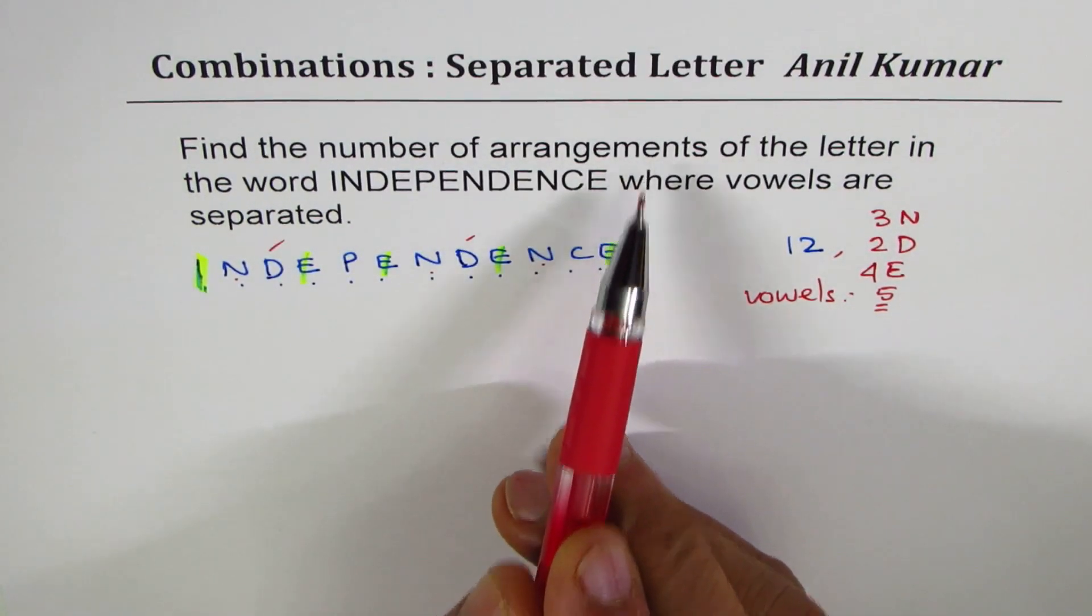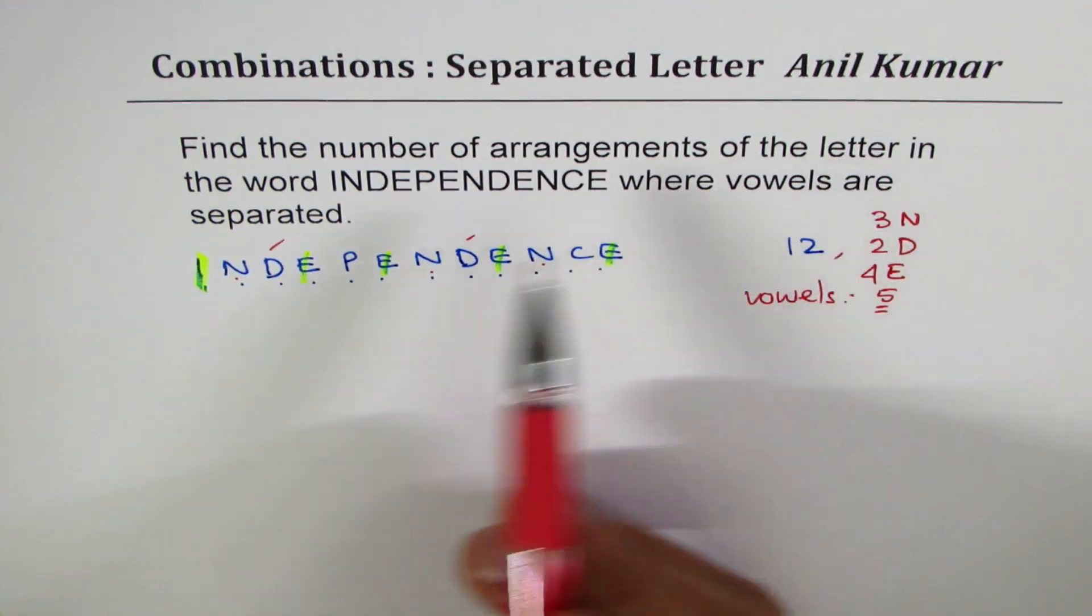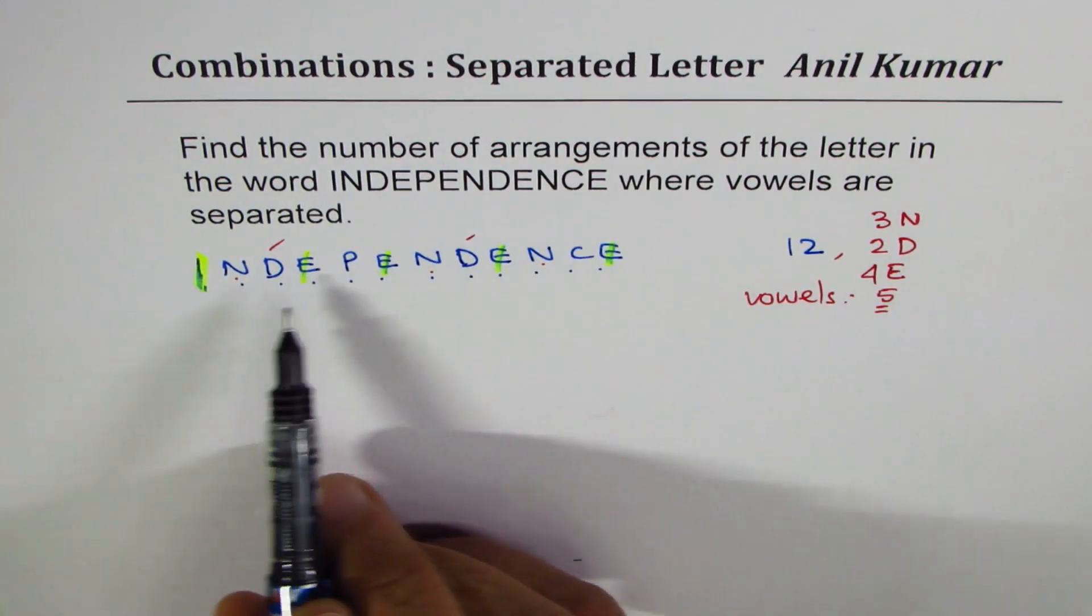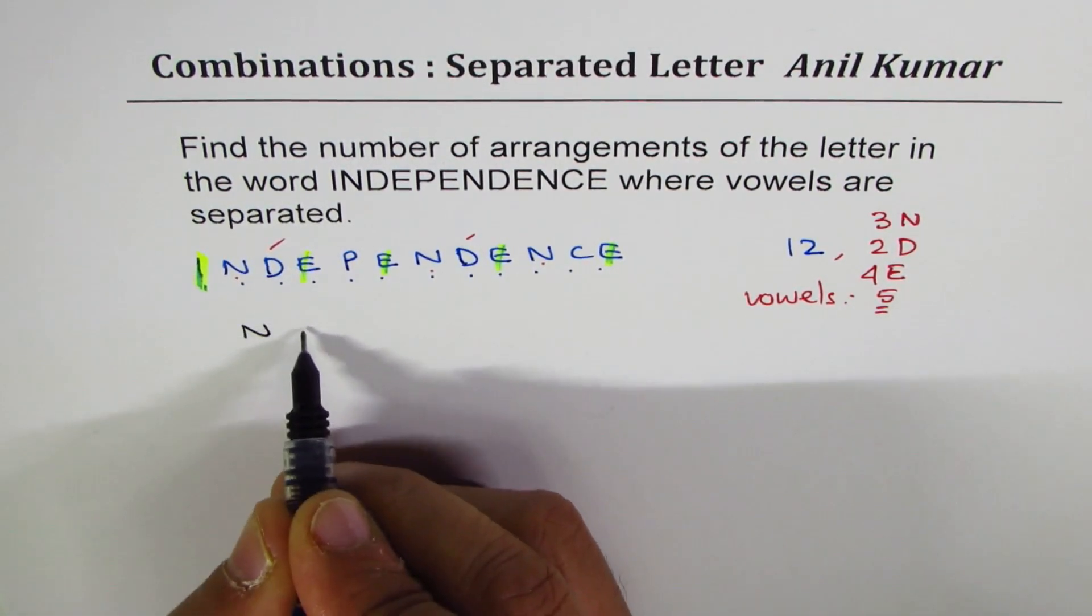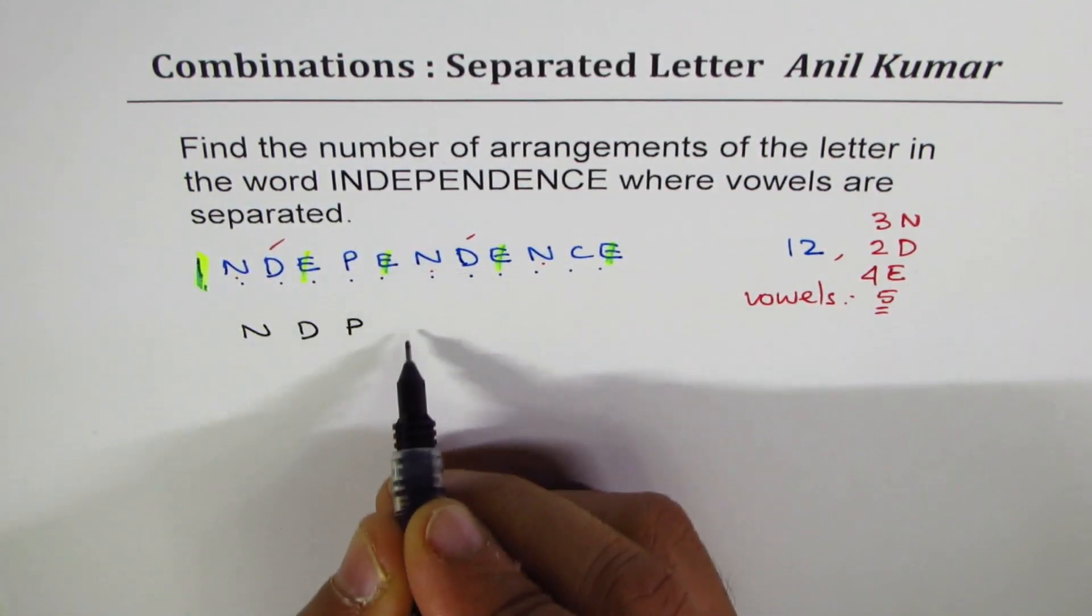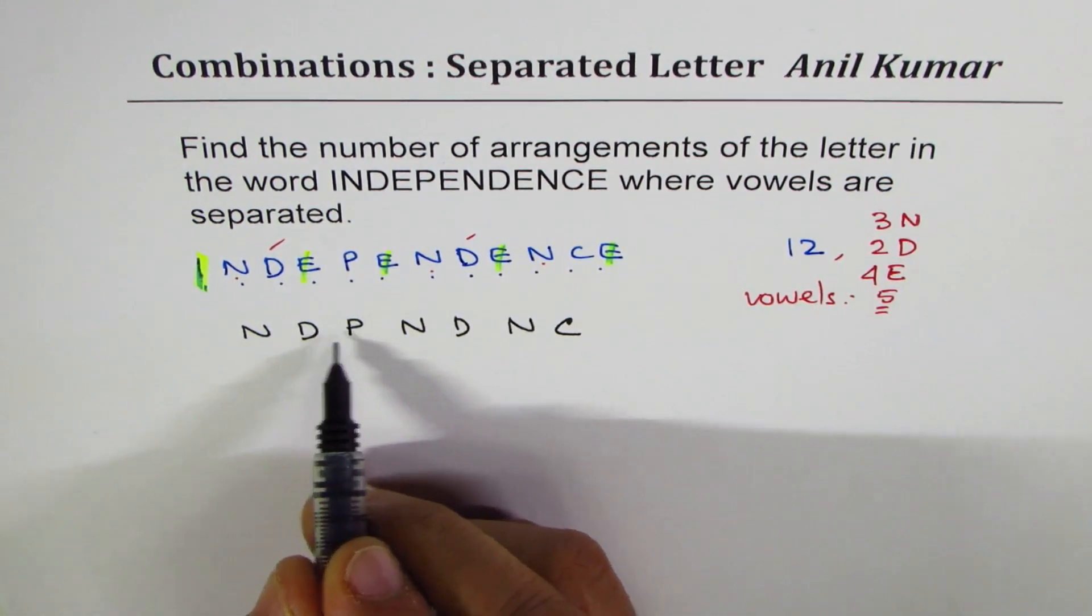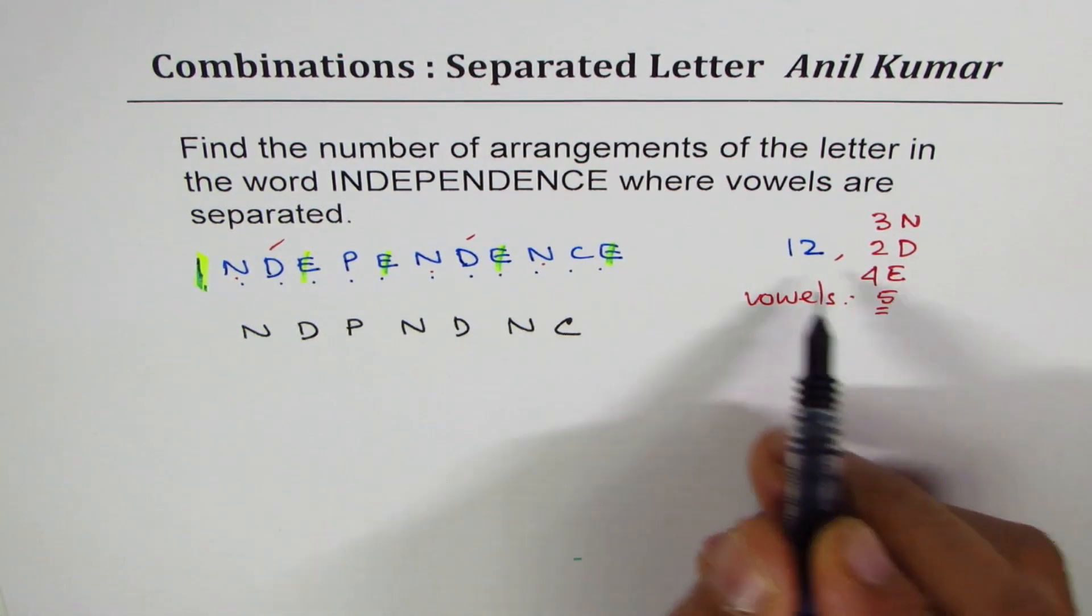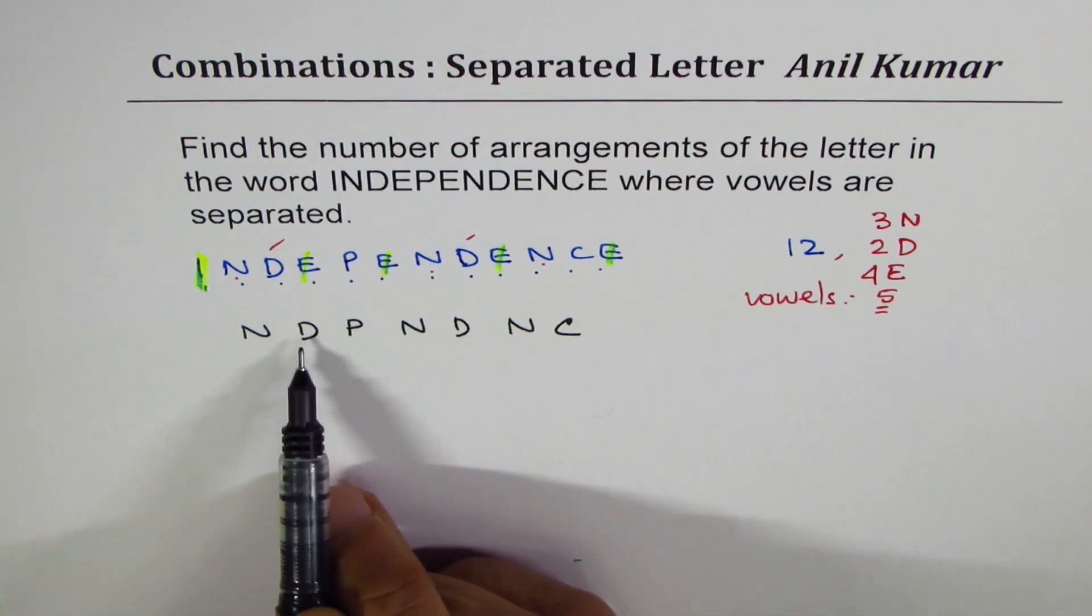Find the number of arrangements of the letters in the word independence where vowels are separated. So, what we will do is, we'll form a word first without vowels. If I take away these vowels, I'm left with N, D, P, N, D, and then again N and C. So, I'm left with seven. Five are vowels. I've already excluded. 12 is total. That means I've not missed any word. It's good to check and go.